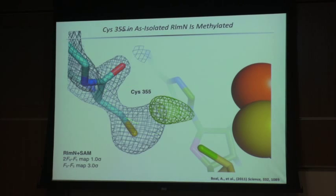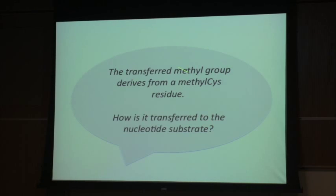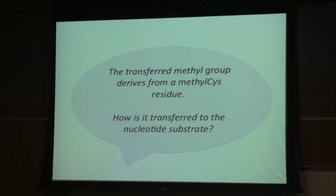Looking closely at the electron density, it fits quite well with a methylated cysteine residue. If you tell the program it's just cysteine, it tells you there's missing electron density. So we see this methylated cysteine by both mass spectrometry and X-ray crystallography. At this point we know the transferred methyl group derives from a methylcysteine residue, but we don't know how it's transferred to the nucleotide substrate. In a thioether, the methyl group is not activated for polar transfer — so why would an enzyme deactivate this methyl group in the course of methylating its substrate?